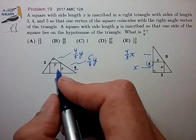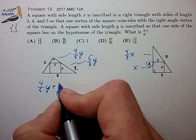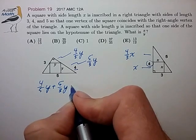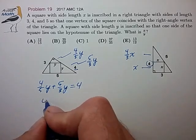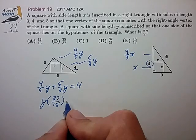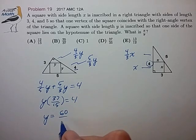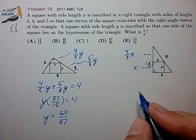So that's just a bit of algebra. In the left case, we have 4/5 y plus 5/3 y summing to 4. That's y times 37/15 equals 4. Y is 60 over 37.